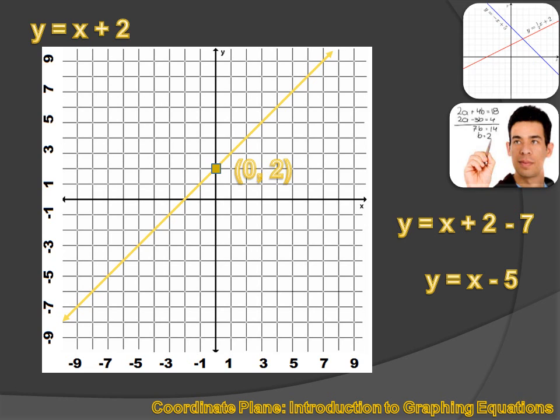And we could simplify that to y equals x minus 5 because 2, or positive 2, minus 7 is minus 5. And if we were to graph y equals x minus 5, it would be the same graph we had before except we would have slid it down 7 spaces.